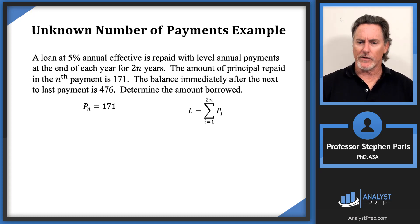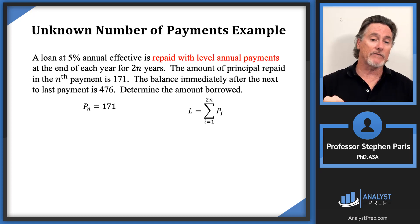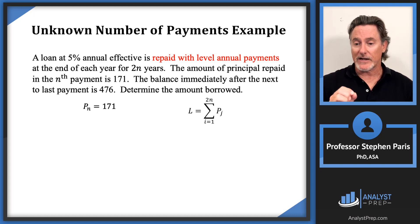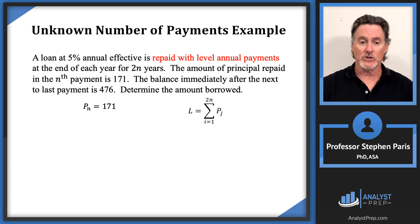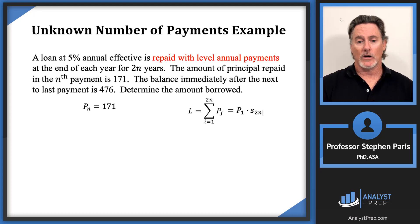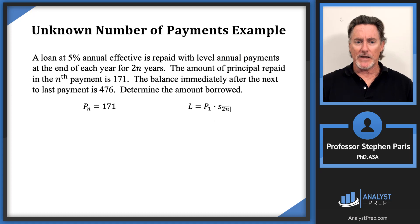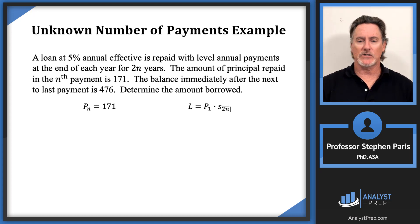Because we have level annual payments, the P values form a geometric progression. When I sum all those P values, I get the same answer as taking the first principal repaid value P_1 and multiplying by s-angle-2n, since there are 2n payments. So the loan amount L = P_1 × s-angle-2n — that's the key equation I'm focusing on.